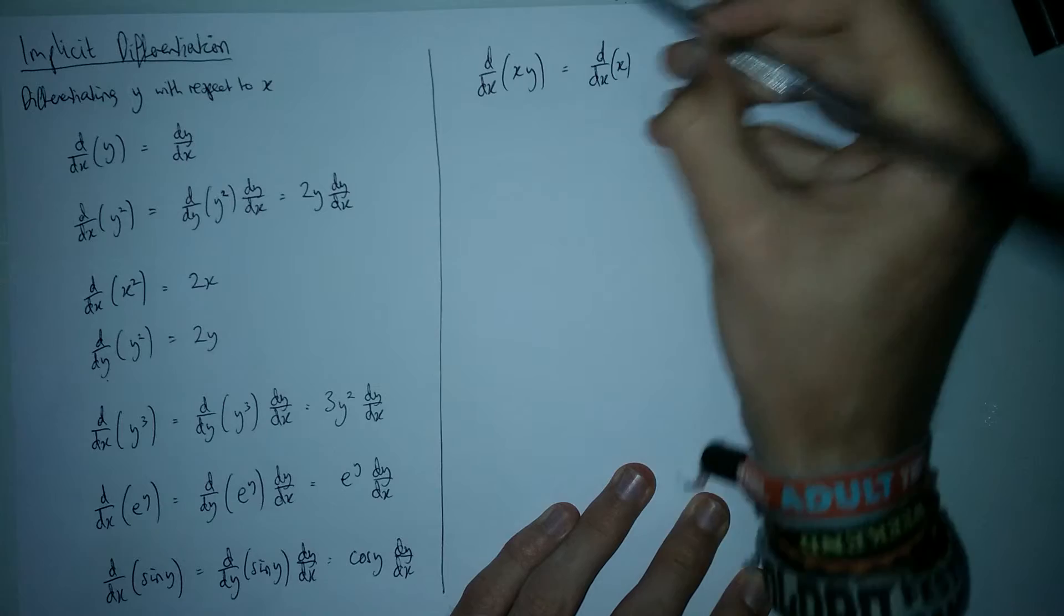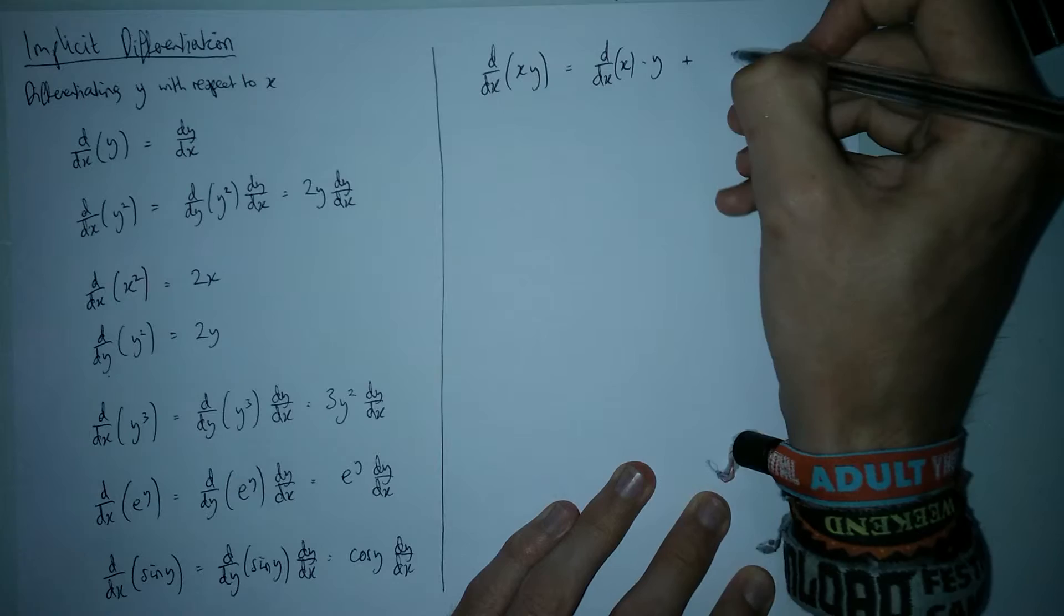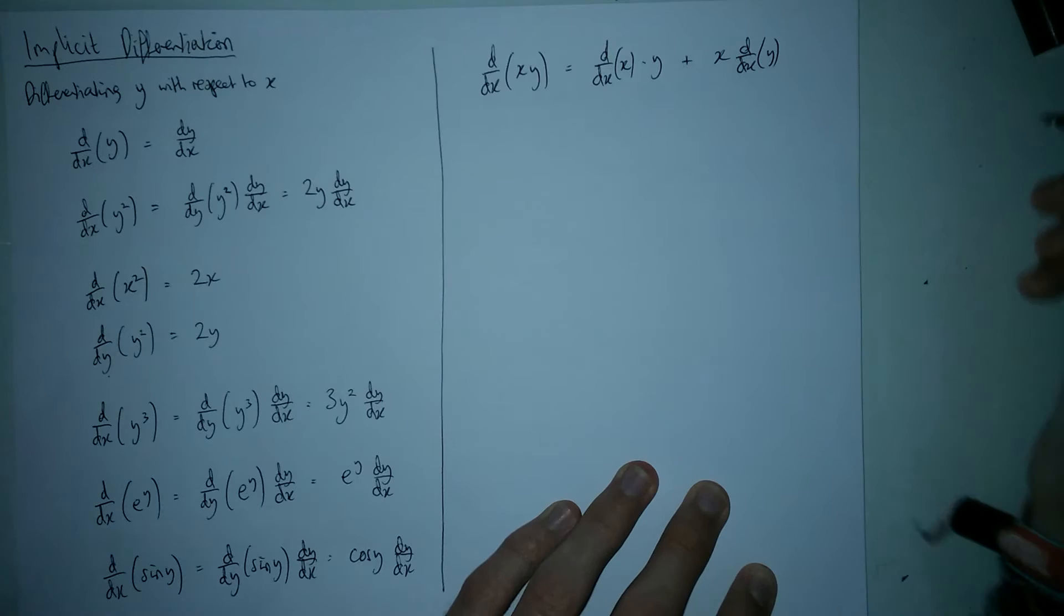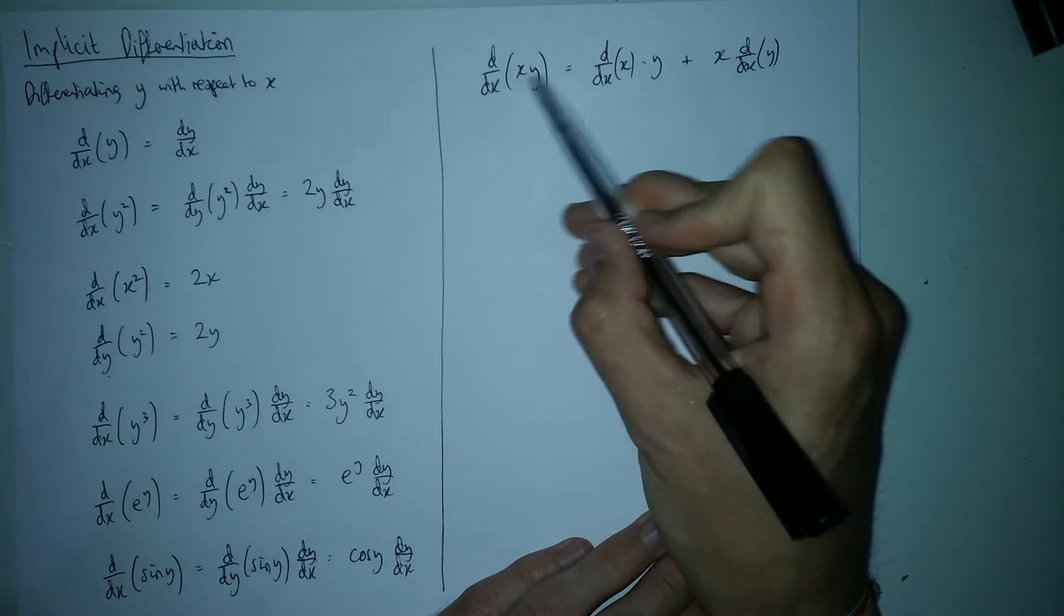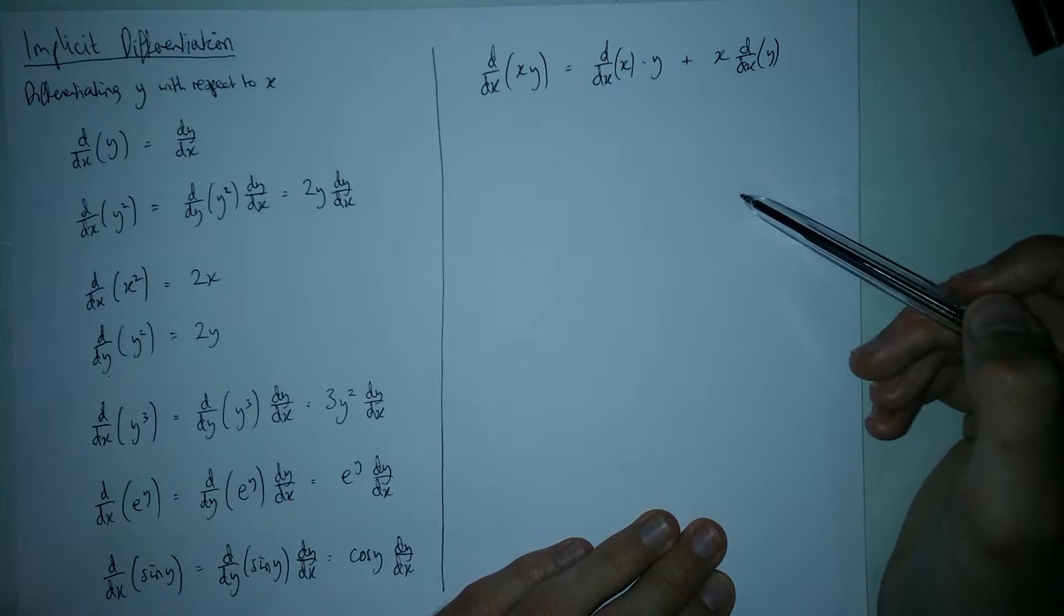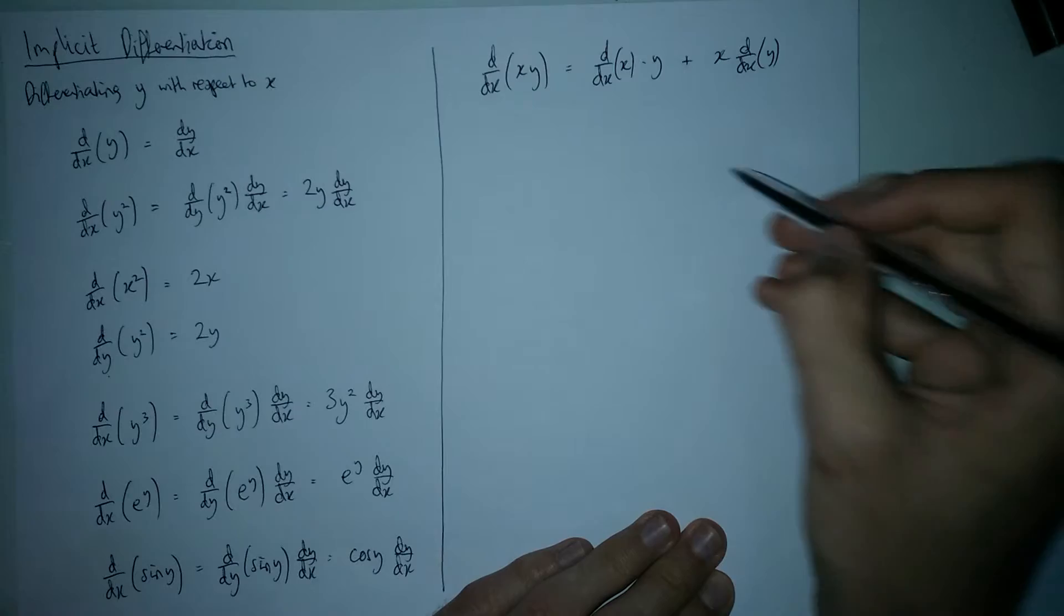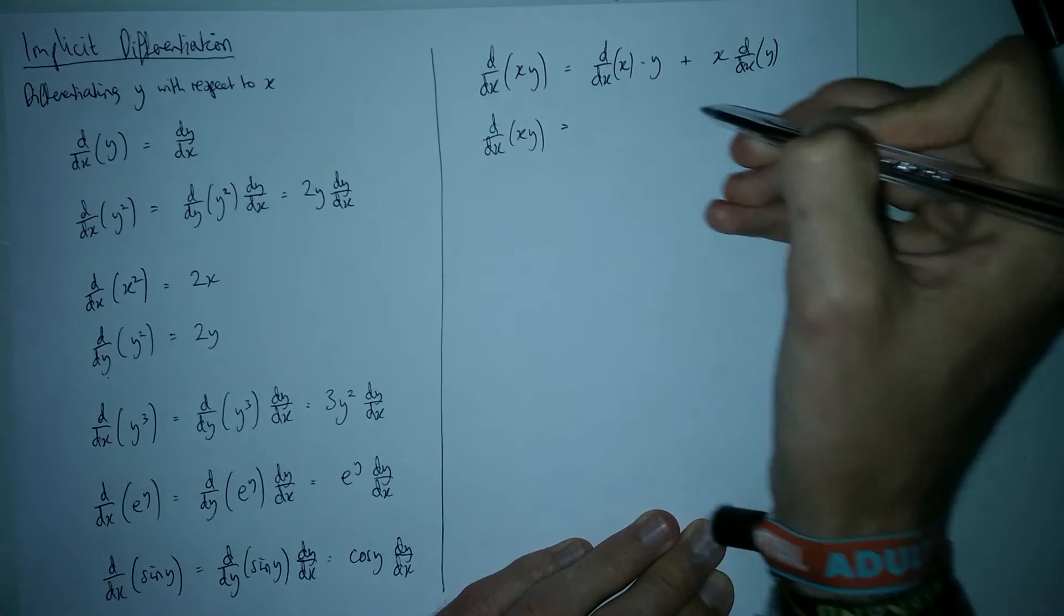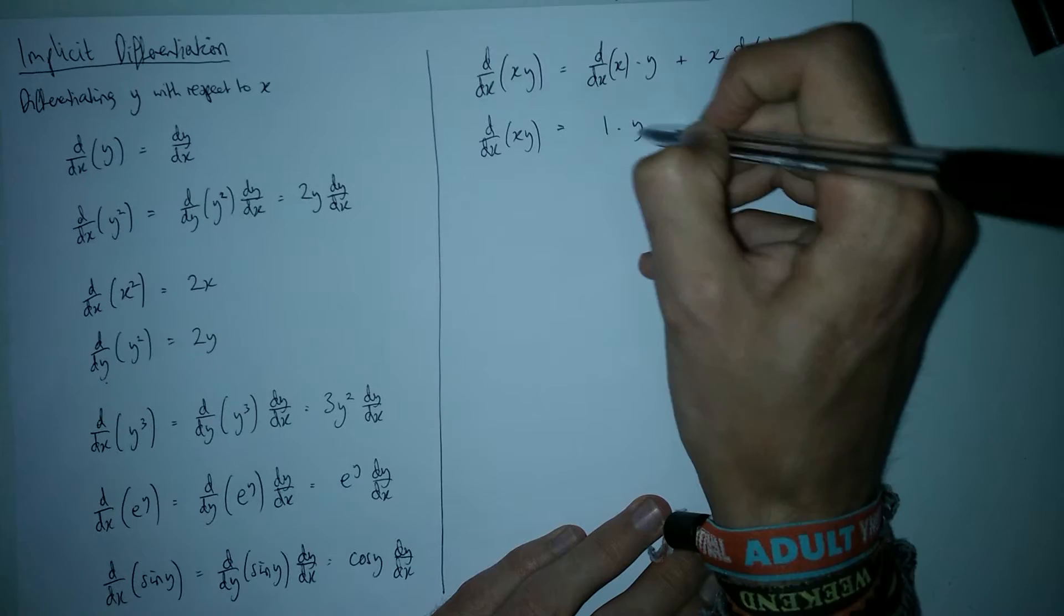The product rule means we're going to differentiate the first part of the product and times by the other part left alone. And then we're going to add on the other way around. We leave the first bit alone, then we differentiate the second bit. Now notice I've written this out really formally. Quite often when we do some mathematics, we just write down the differential and we would never write down the terms. But it helps when you're doing implicit differentiation to write it out because then you can see which ones are weird and which ones aren't weird. Don't have to, but I'm a big advocate of writing it out.